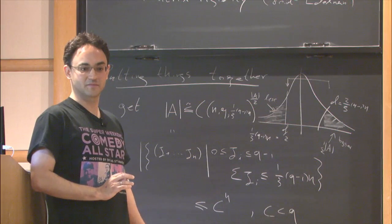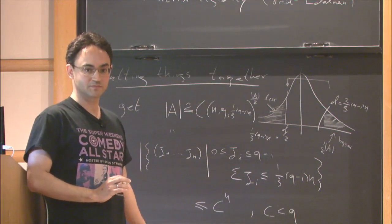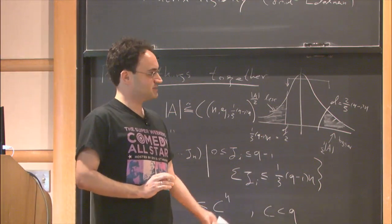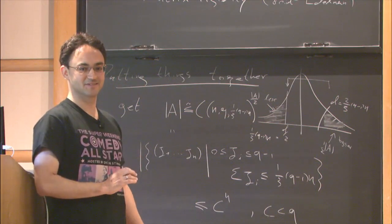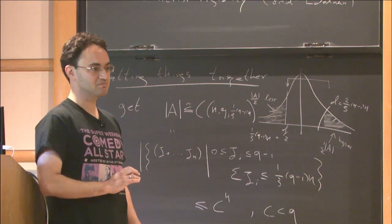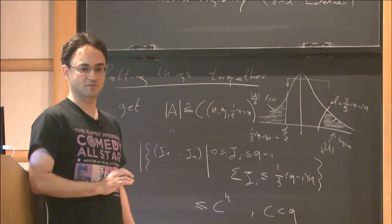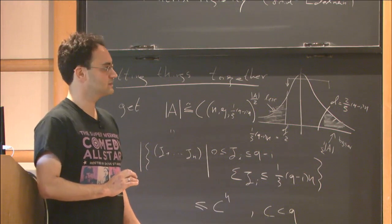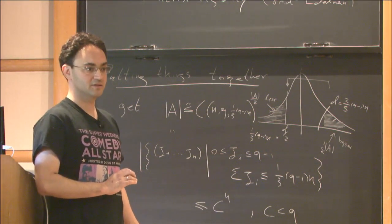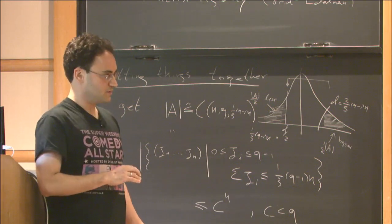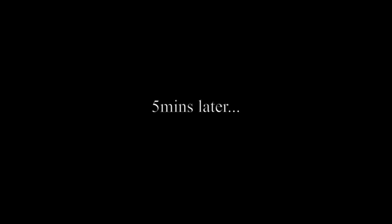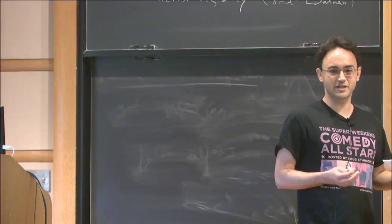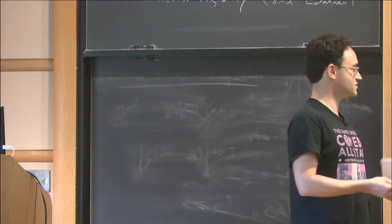Any hope to improve the bound by changing the image field? If you improve it for the non-tripartite case — it can't work for the tripartite, and this is probably tight. After a five-minute break, I'll mention the sunflower conjecture.